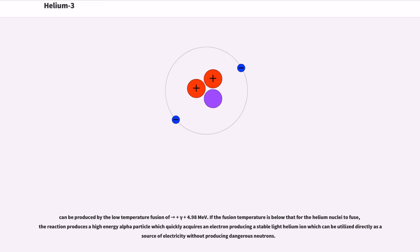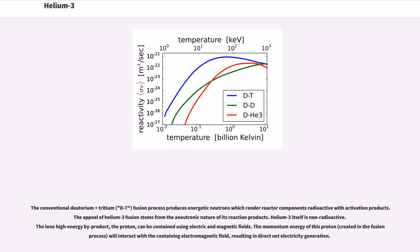Helium-4 can be produced by low temperature fusion producing 4.98 MeV. If the fusion temperature is below that for the helium nuclei to fuse, the reaction produces a high-energy alpha particle which quickly acquires an electron producing a stable light helium ion which can be utilized directly as a source of electricity without producing dangerous neutrons. The conventional deuterium plus tritium fusion process produces energetic neutrons which render reactor components radioactive with activation products. The appeal of helium-3 fusion stems from the aneutronic nature of its reaction products. Helium-3 itself is non-radioactive.